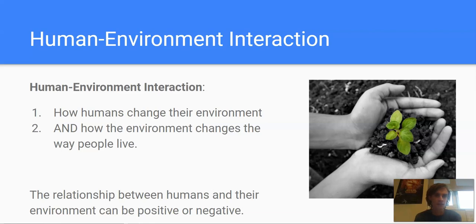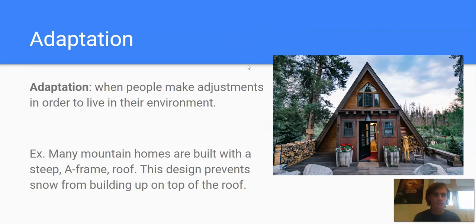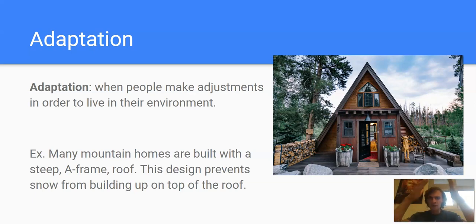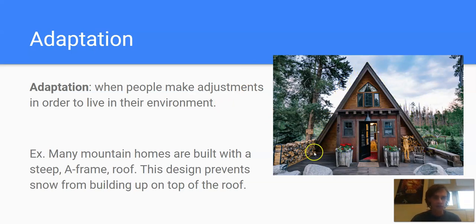So let's talk about some of the things that revolve around human-environment interaction. Adaptation is when people make adjustments in order to live in their environment. An example in Colorado would be an A-frame home. Many mountain homes are built with a steep A-frame roof — this is not just because it looks cool, it's an adaptation. In the mountains, when it snows a lot, the A-frame roof helps create runoff so that the roof does not cave in with the pressure of all the snow. So that would be an example of an adaptation where people in the mountains have made an adjustment by building their homes with an A-frame-shaped roof to live in their environment.